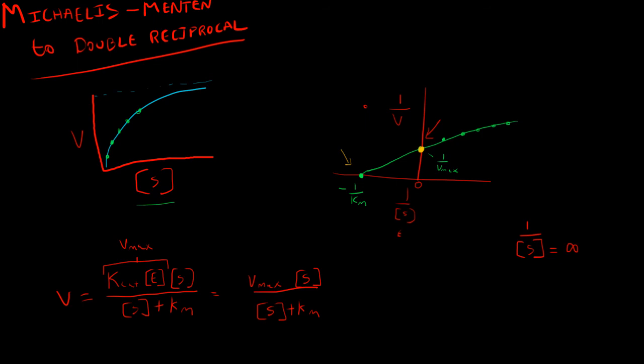So experimentally, we can get a small handful of data sets, again, in a small window of concentration ranges. And this double reciprocal plot makes it easier to extrapolate this data and predict our Km and Vmax.